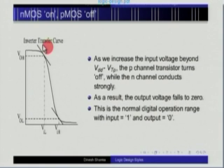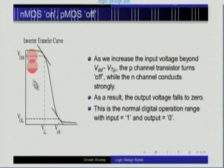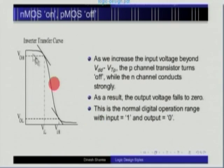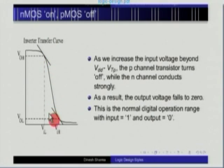Looking at the transfer characteristic, we draw tangents to this curve and pick those tangents which have a slope of minus 1. Wherever the tangent is at 45 degrees in the negative direction, the slope is equal to minus 1, and there are two such points on this curve where the slope is minus 1.